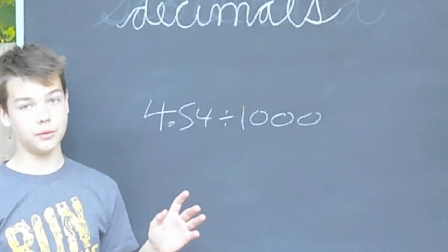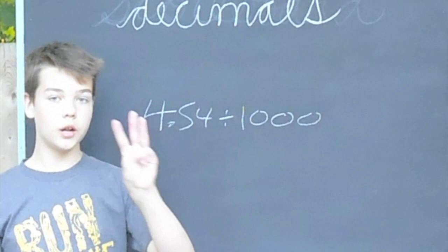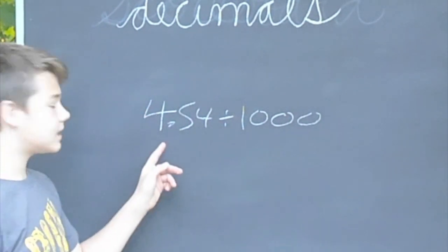And we're going to count the zeros. 1, 2, 3. Okay, 3 is the number of places we will move our decimal.